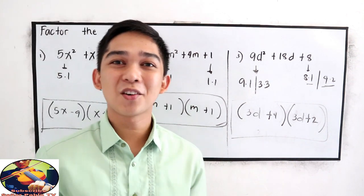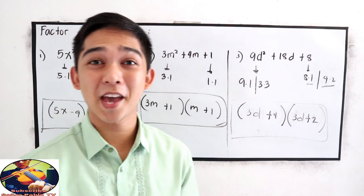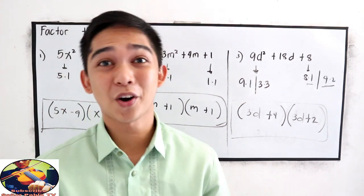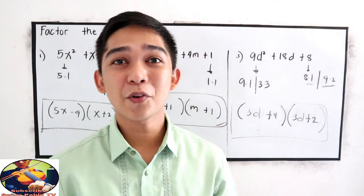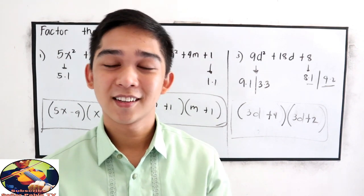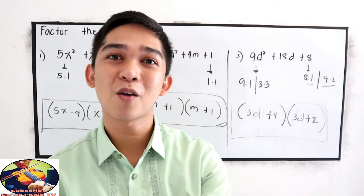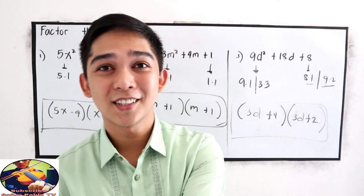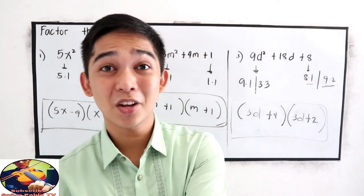That is factoring in the form ax squared plus bx plus c. And we use the trial and error method. Thank you for watching. If you understand, drop a comment in our comment section. And you can share with your classmates.